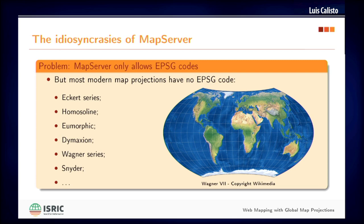Like you see here the Wagner 7 projection. There is a caveat with this: we all got really hooked up to the EPSG registry, which is a great, awesome thing, but it doesn't provide codes for modern map projections. So you have to go around using these nice, modern, accurate projections, but you don't have EPSG codes.